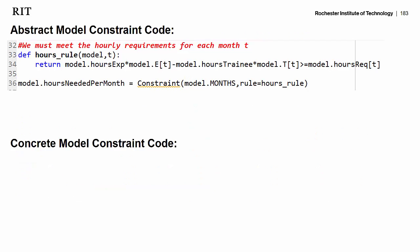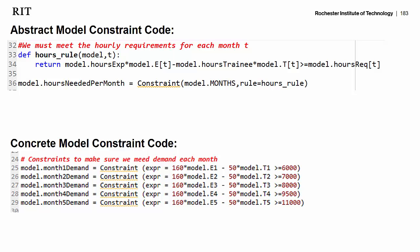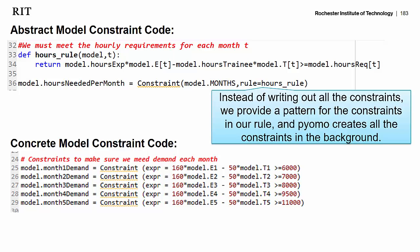Comparing our abstract model constraint code to our concrete model constraint code: in our concrete model we needed five separate lines and wrote each constraint on its own, which is fine when there are only five constraints. But if we were planning for the next 37 years, that would be a lot of constraints to write by hand. So instead, in our abstract model, we provide a rule or pattern to follow when making constraints, and then Pyomo makes all of the constraints for us.